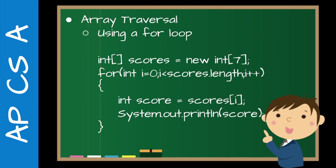Array traversal — this is super important. This is that pattern I talk about with my students all the time; it comes up in the free response questions and basically everywhere. We've created an array with seven elements. So: `for (int i = 0; ...)` — i represents the index. The variable i comes from older programming languages where i stood for integer, and you'll often see i, j, k used. We start at zero because indices start at zero. The condition is `i < scores.length` — notice it's the array name dot length with no parentheses.